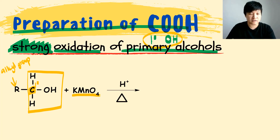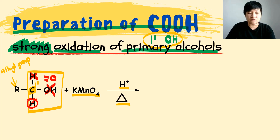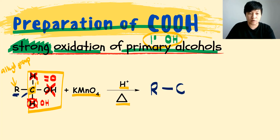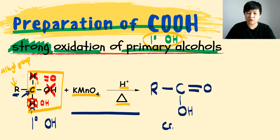Your primary alcohol undergoes strong oxidation using KMnO4, H+, and heat. What happens in the strong oxidation of primary alcohol? The OH will be removed and the H will be removed. When the H and OH are removed, we replace them with a double bond O. One of the hydrogens still bonded to the carbon that was holding the OH will also be oxidized and become OH. So the R group remains unchanged, the carbon is still there, the OH and H are replaced by double bond O, and the remaining H is oxidized to become OH — that is how your primary alcohol undergoes strong oxidation to produce carboxylic acid.